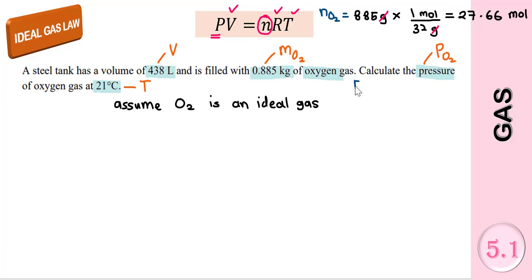We have N. Let's write again the value of R: 0.08206 liter atmosphere mole minus 1 K minus 1. So we have the moles. The pressure that we will get is in atmospheres. The volume must be in liters.